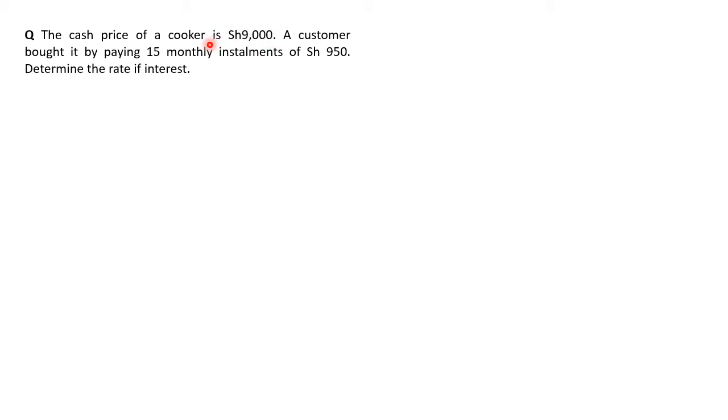But this person ends up paying 15 times 950. So that is the amount, but he borrowed 9,000. And therefore, we progress as follows. The cash price in our case is 9,000, that's the principal or the borrowed money, but the hire purchase price or amount is 15 times 950. And therefore, that is 14,250. This is the amount that he actually pays.